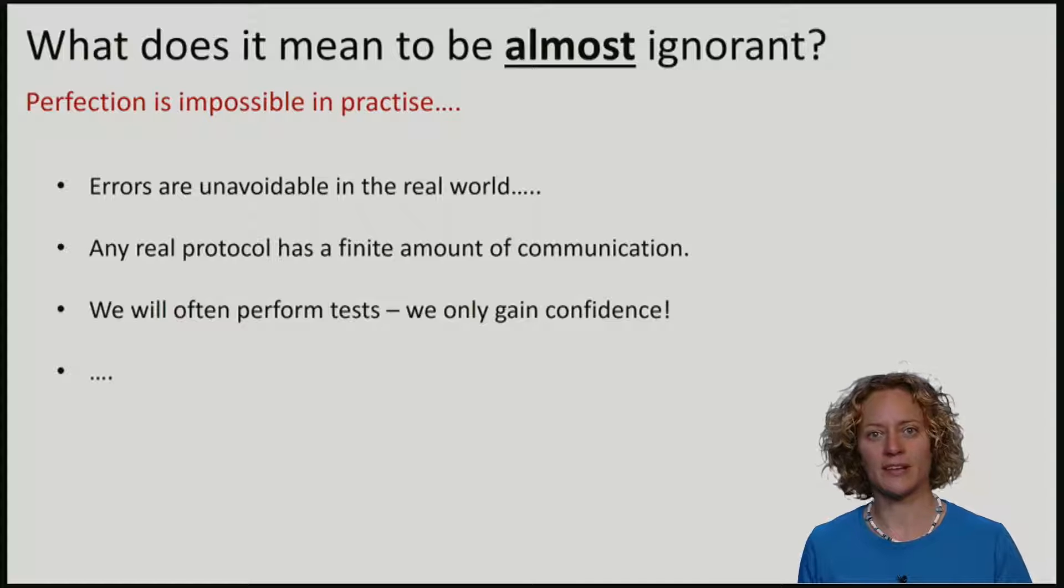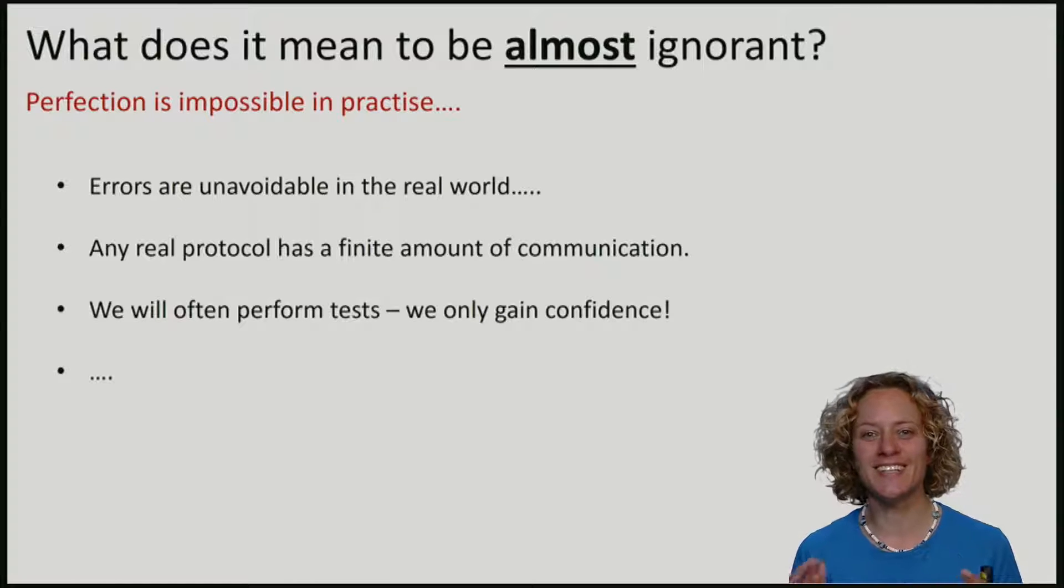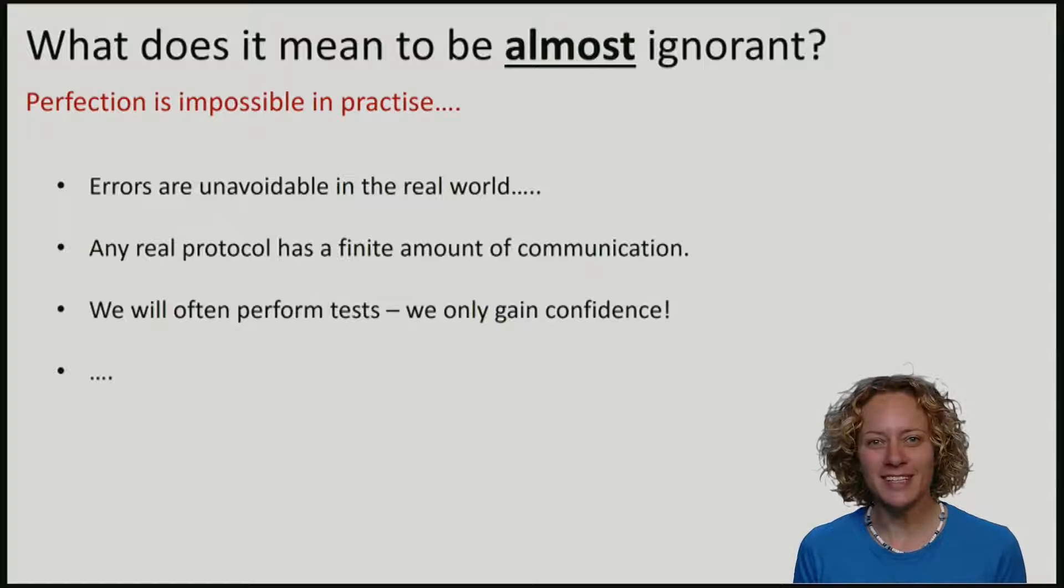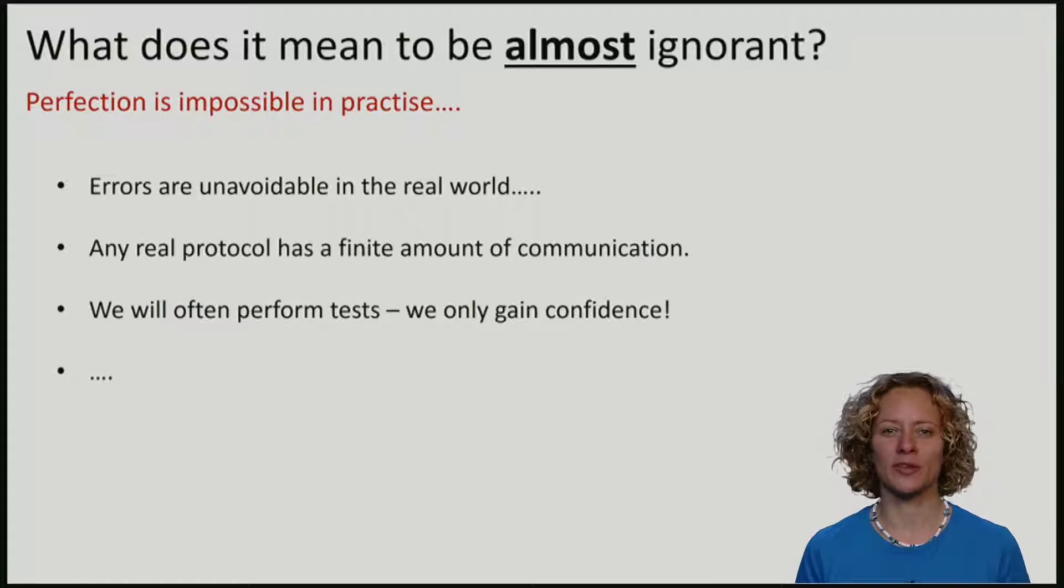Any real protocol has a finite amount of communication. We will also perform tests on what the adversary has done, meaning that we will only gain some confidence about the behavior, but we will never know perfectly where the adversary is really completely ignorant. We will see many examples where we cannot show that our protocol achieves this utopian ideal that Eve is completely ignorant about the key. This means that we need a measure of being approximately ignorant.